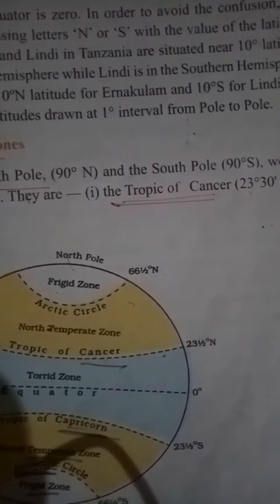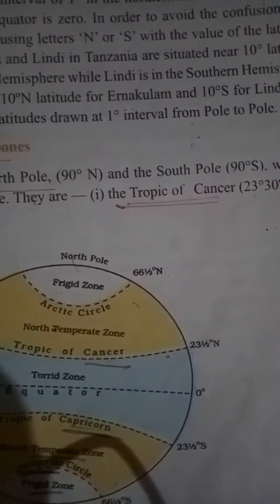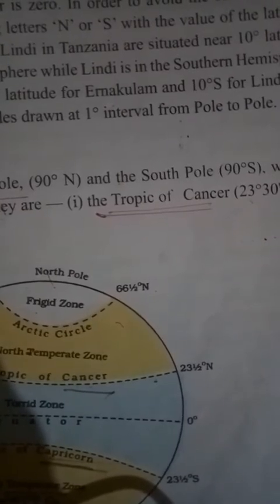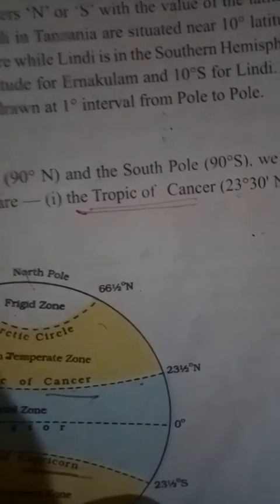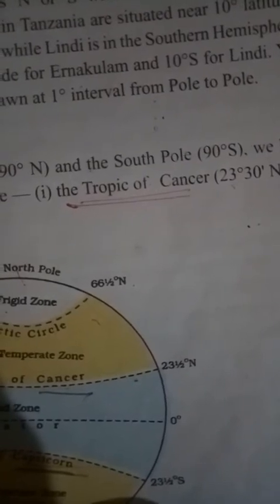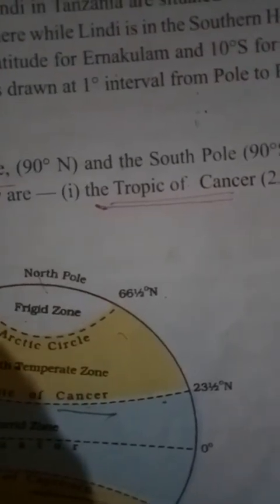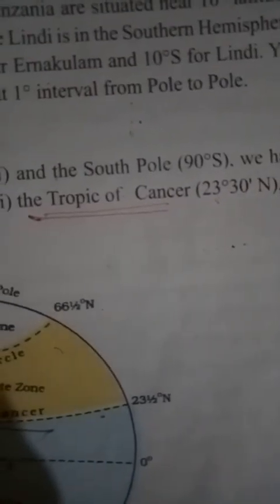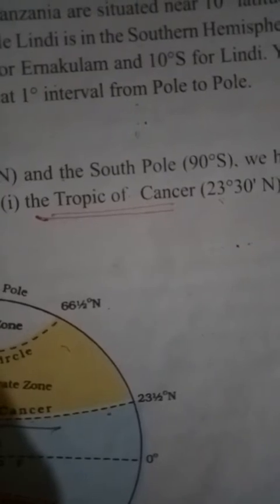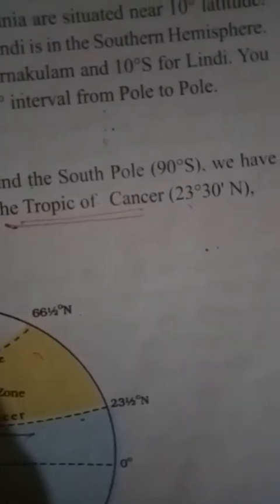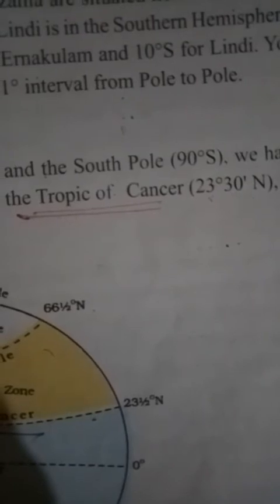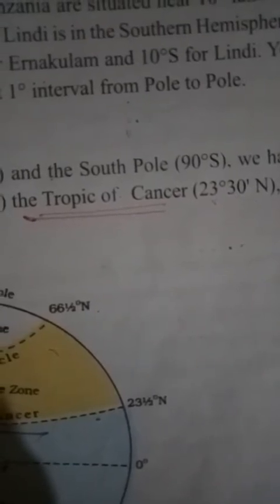Assalamu alaikum and welcome to a social science class. Today's topic is 'Locating Places on the Earth.' Please refer to chapter number 3 on page number 20 of your textbook. When you go to a new place, you observe certain prominent features — it could be a tree, a river, or a hill. It helps to locate nearby places. Such features are called landmarks or points of reference. Without such reference points, it is very difficult to locate places on our big planet.